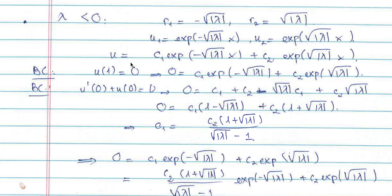Because u(1) = 0, you replace x=1 into u. When you replace 1 here you get exponential of minus square root of lambda, and when you replace 1 here you get exponential of square root of lambda. This gives you 0 = c1 times this term plus c2 times this term. The second boundary condition is u'(0) + u(0) = 0.